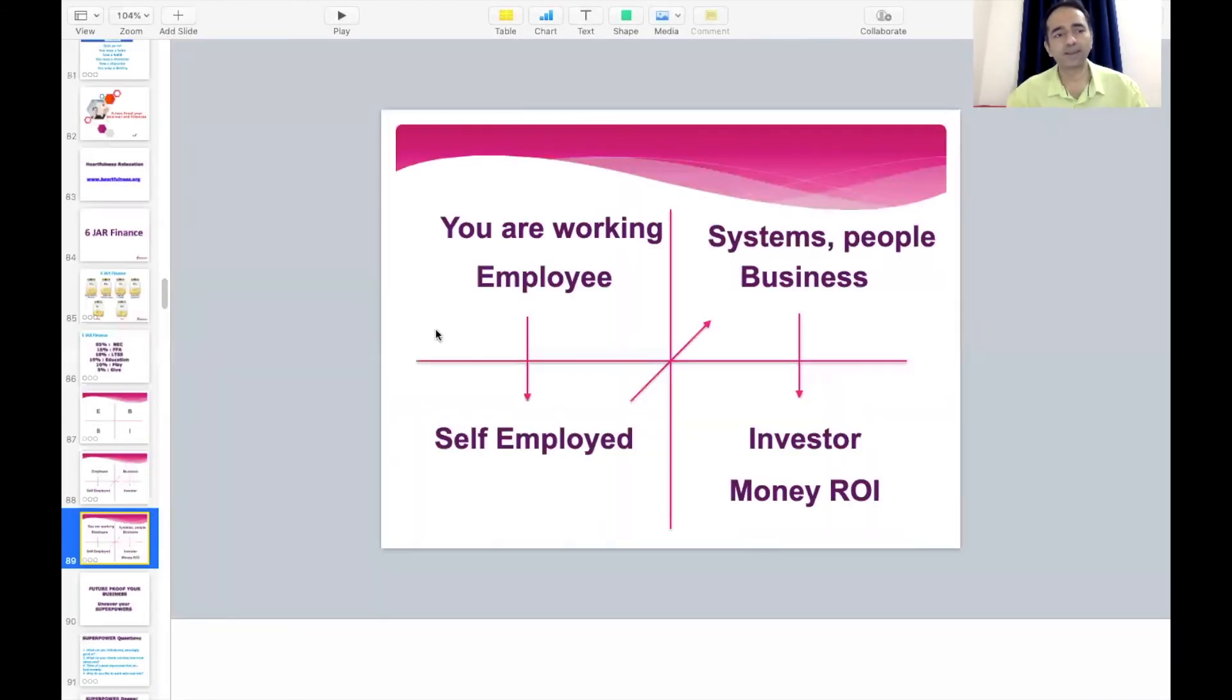So this is the ESBI or the Rich Dad Poor Dad Robert Kiyosaki model. He's extolled this particular method, and it's beautiful. He structured it really well to move from an employee mindset into an investor or a business mindset. Thanks so much for watching. Have a great day.